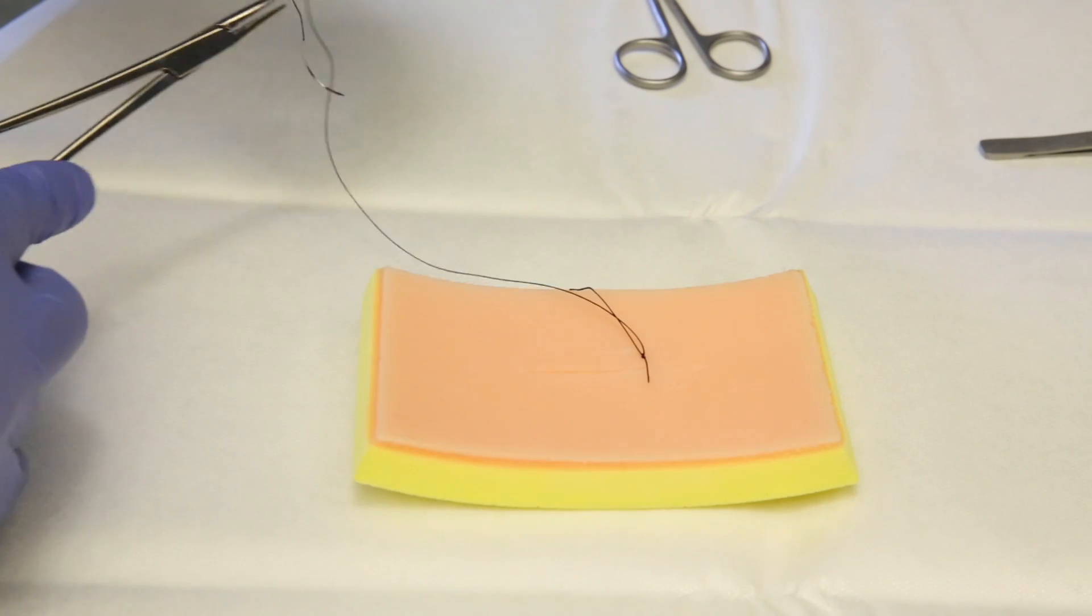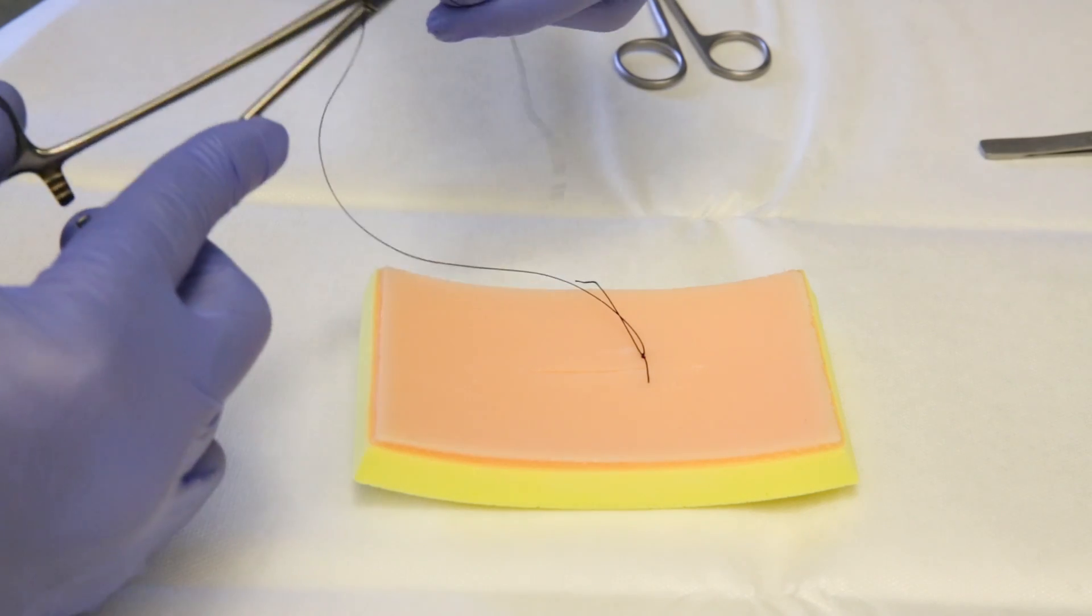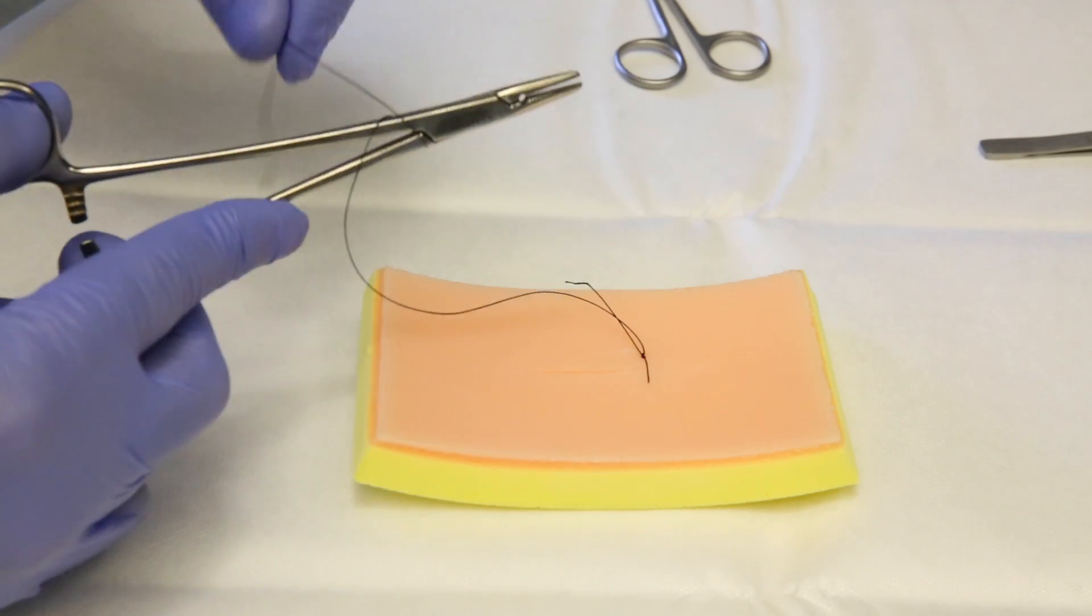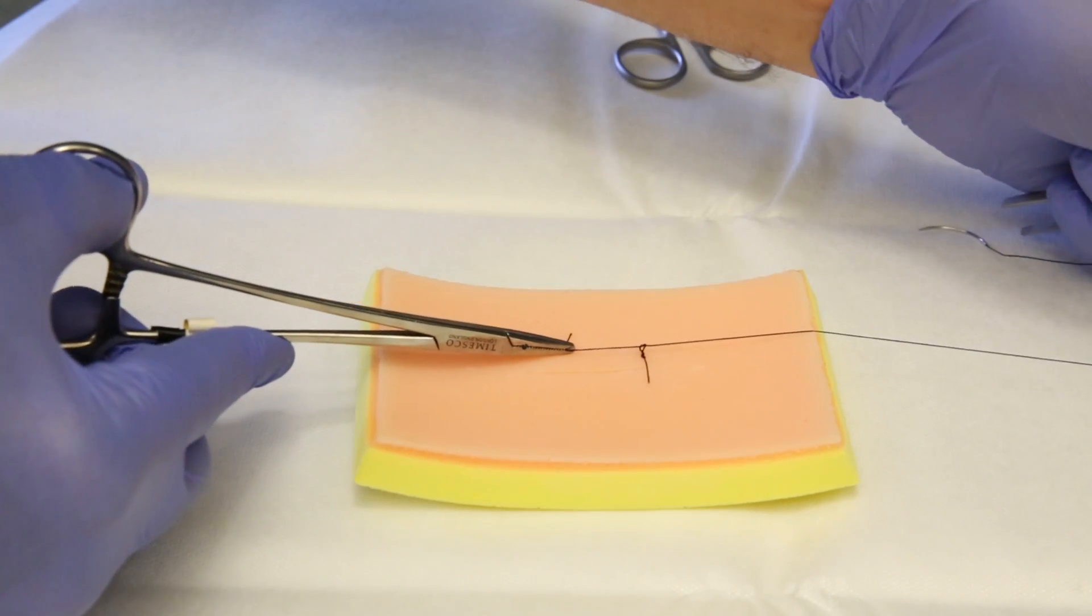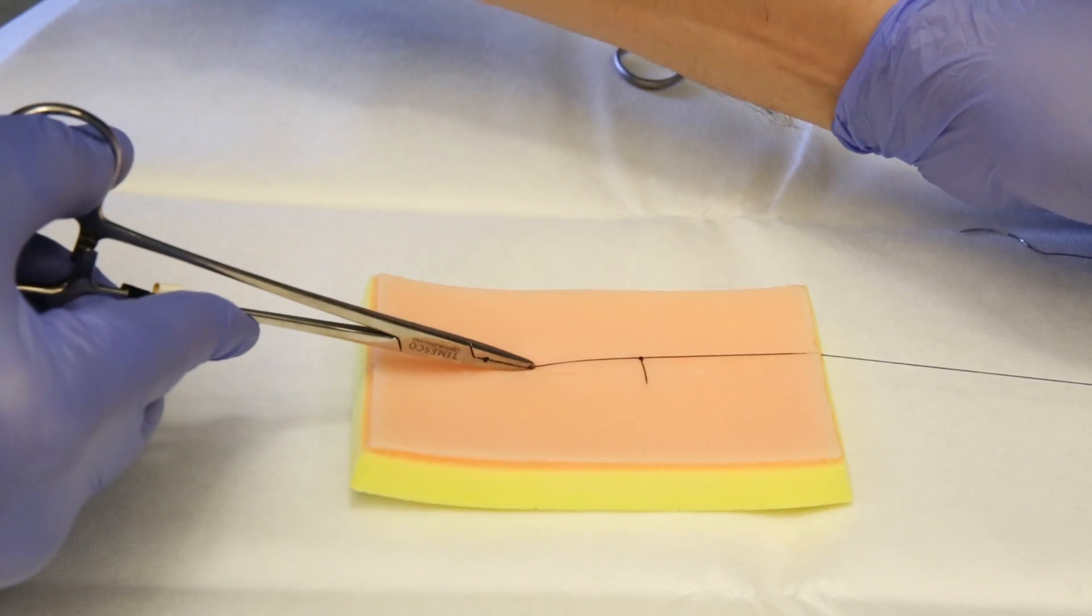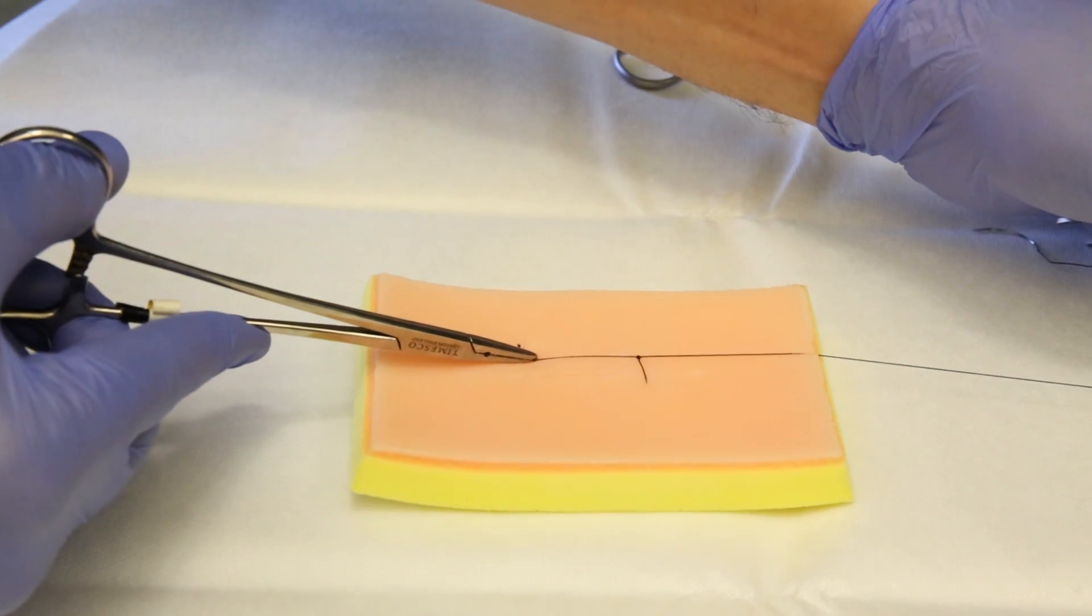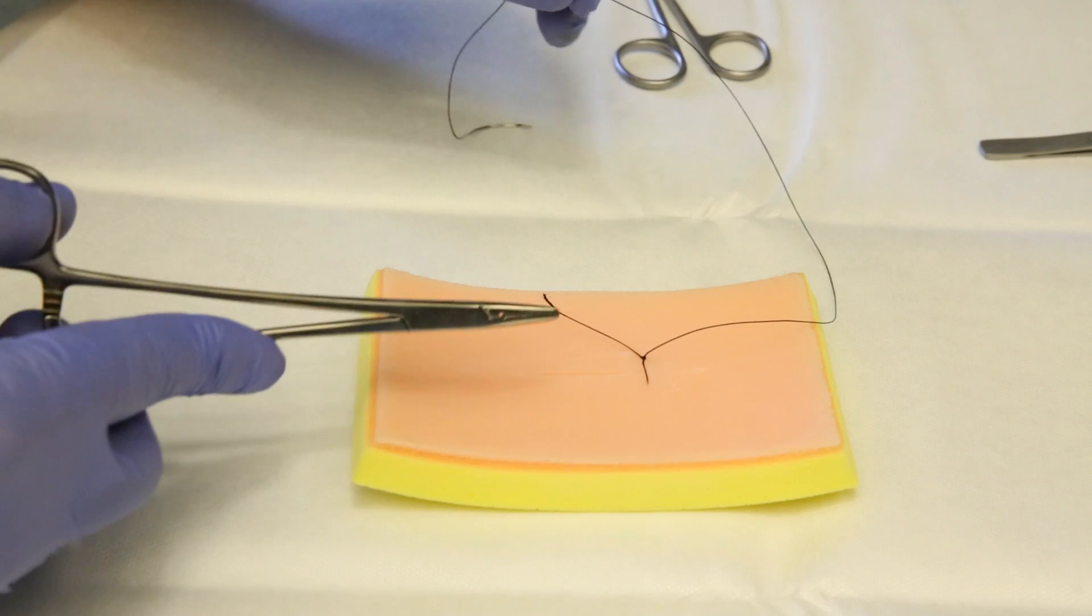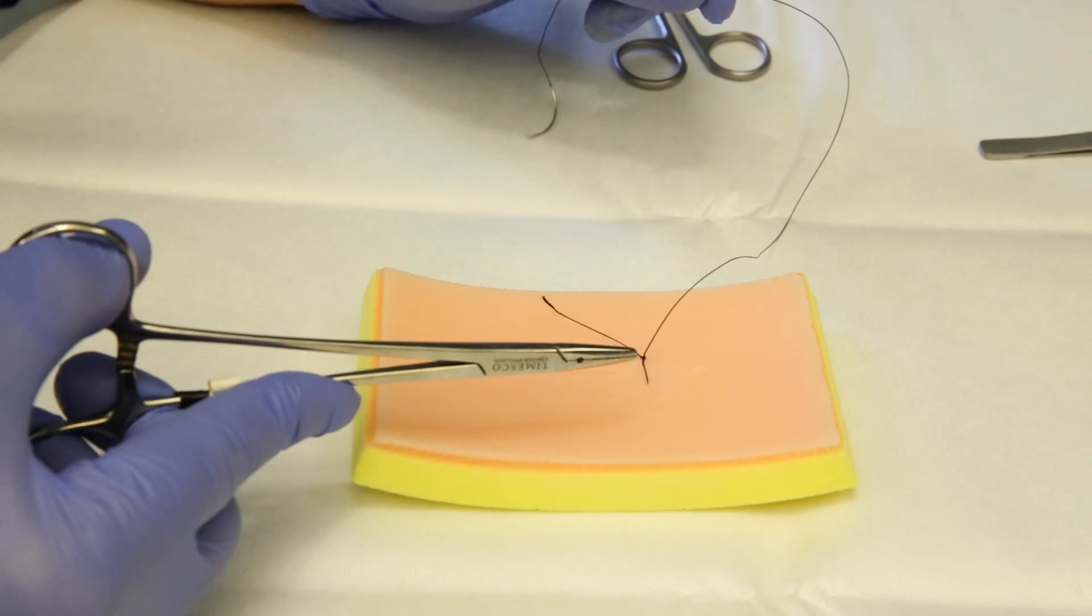Now, in order to secure this knot, then we make this time only one turn, taking the end and stabilize our knot here. We avoid excessive tension. The tension you need is just to approximate the wound margin together.